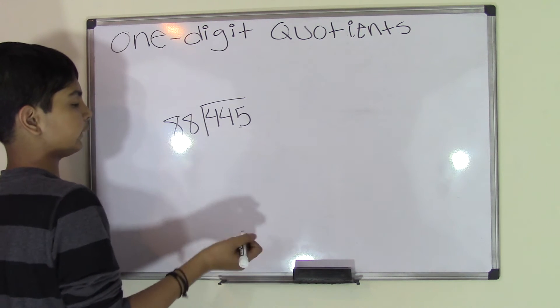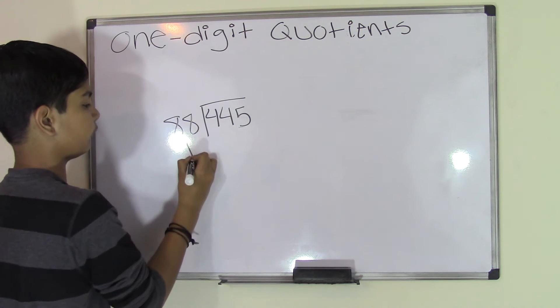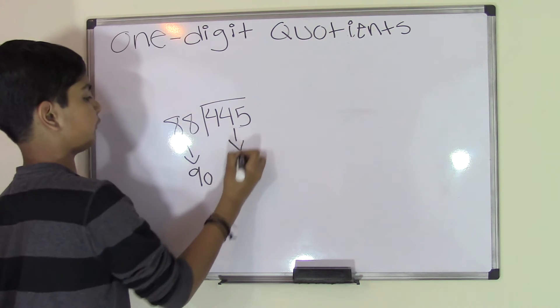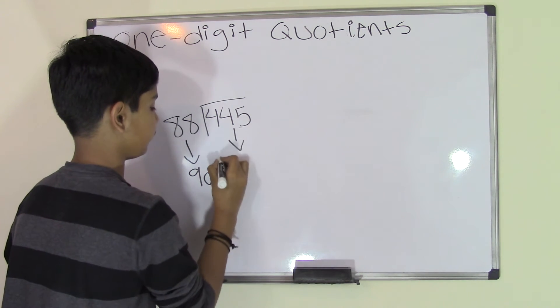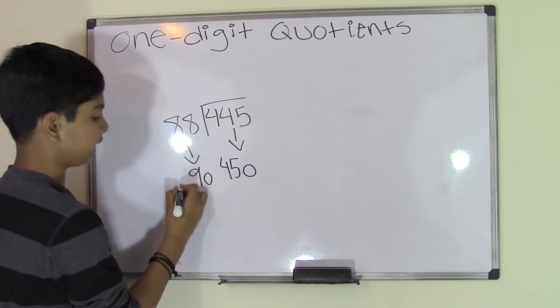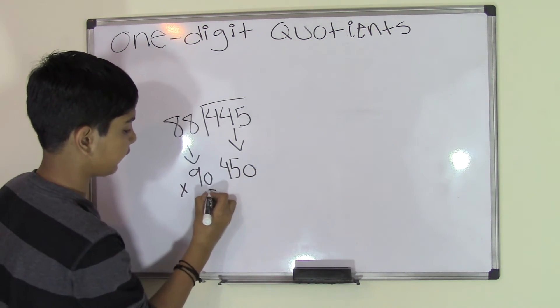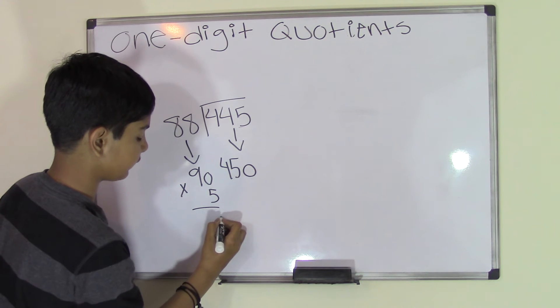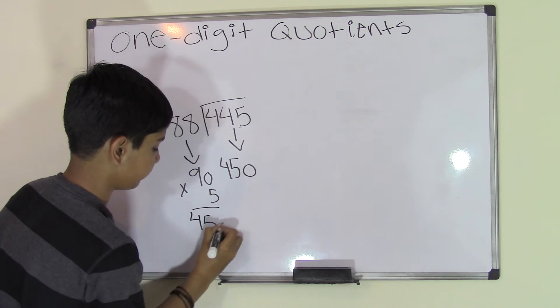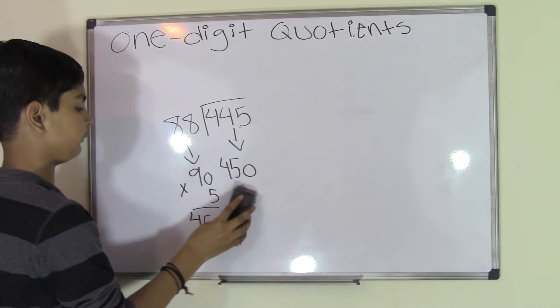Now we use estimation to check the closest number. So we'll round the 88 to 90, we'll round the 445 to 450, and we automatically know that 90 times 5 is 450. So our first number would be 5.